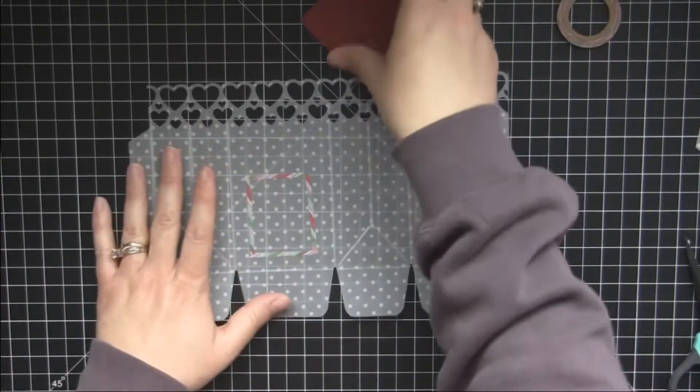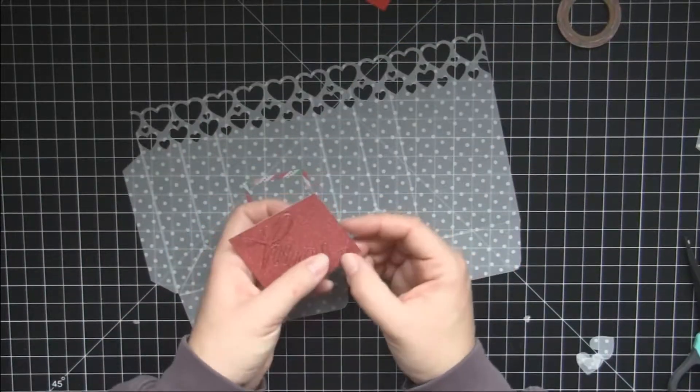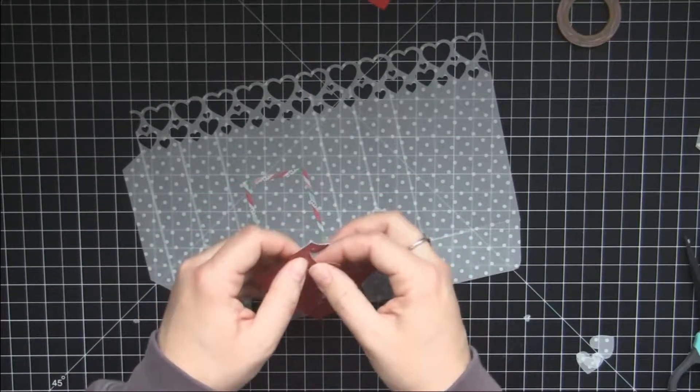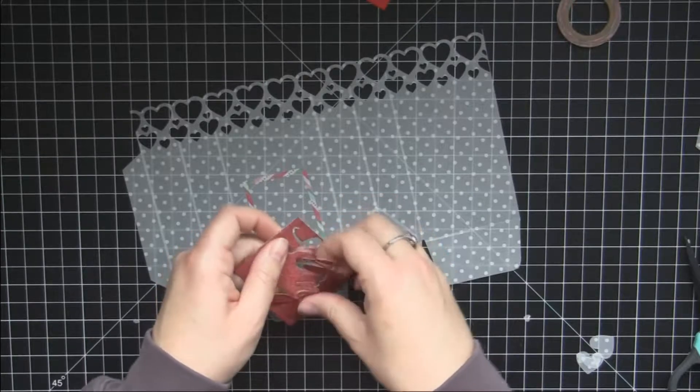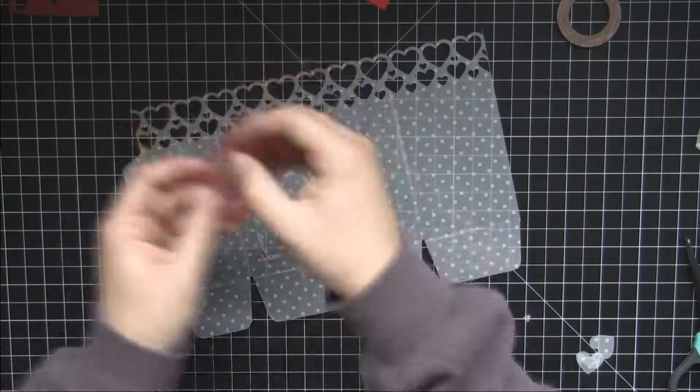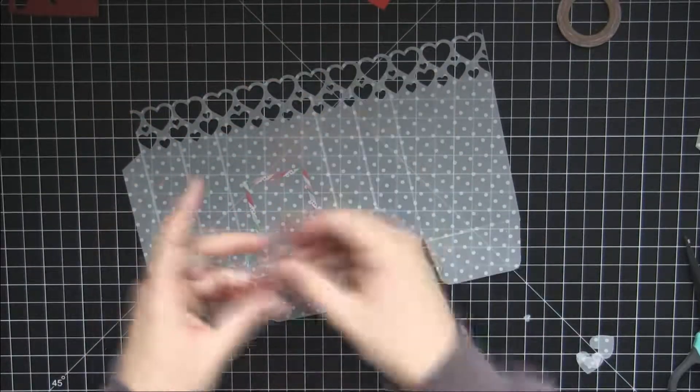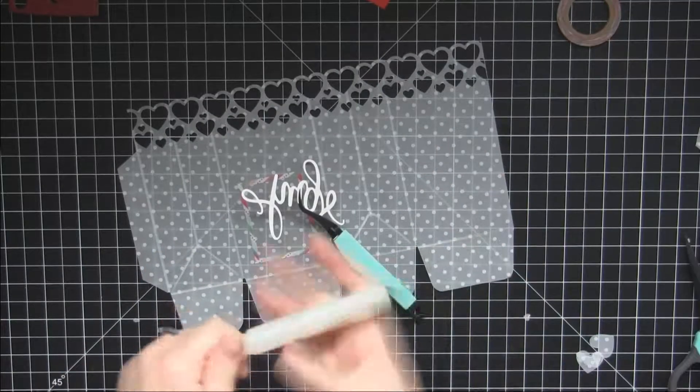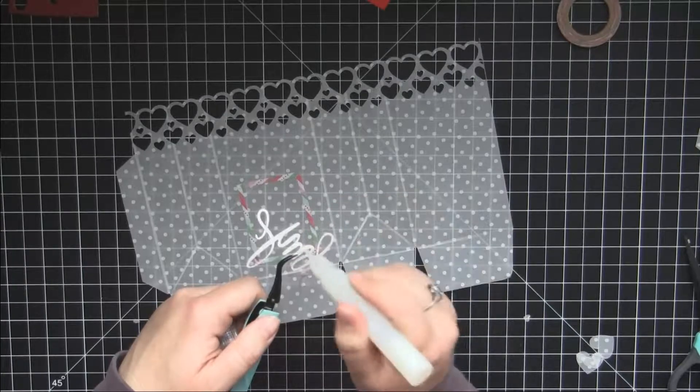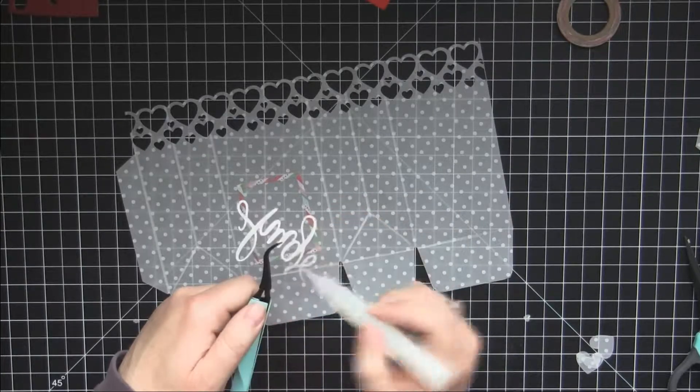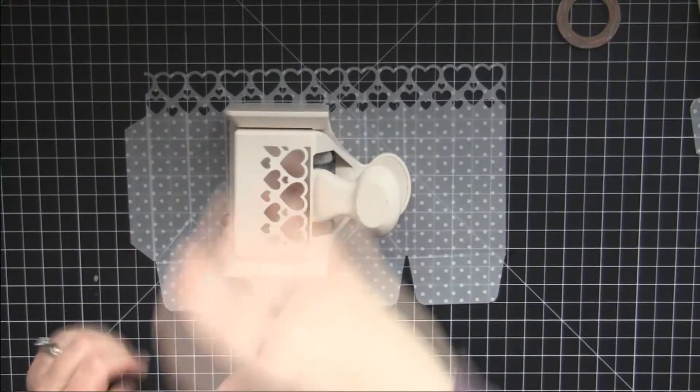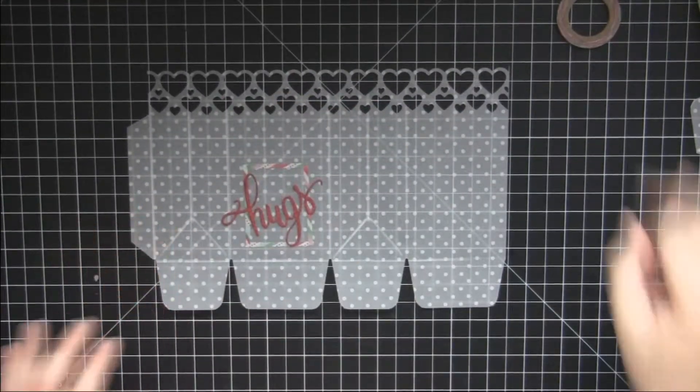And then I'm going to take my hugs. This one's out of glitter paper. I'm going to take my hugs cut out, die cut, and I'm going to adhere that to the front. Okay.